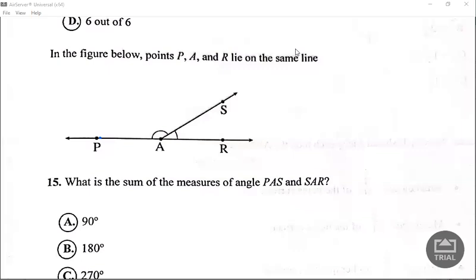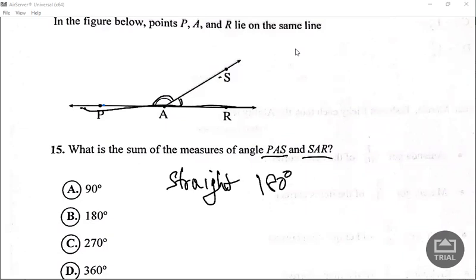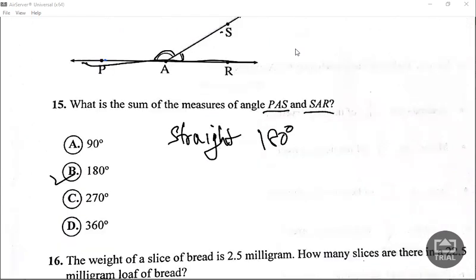In the figure below, points P, A, and R lie on the same line. What is the sum of the measure of angle PAS plus angle SAR? This angle right here plus this angle right here. Now angle on a straight line measures 180 degrees. So the two angles add up to 180 degrees.